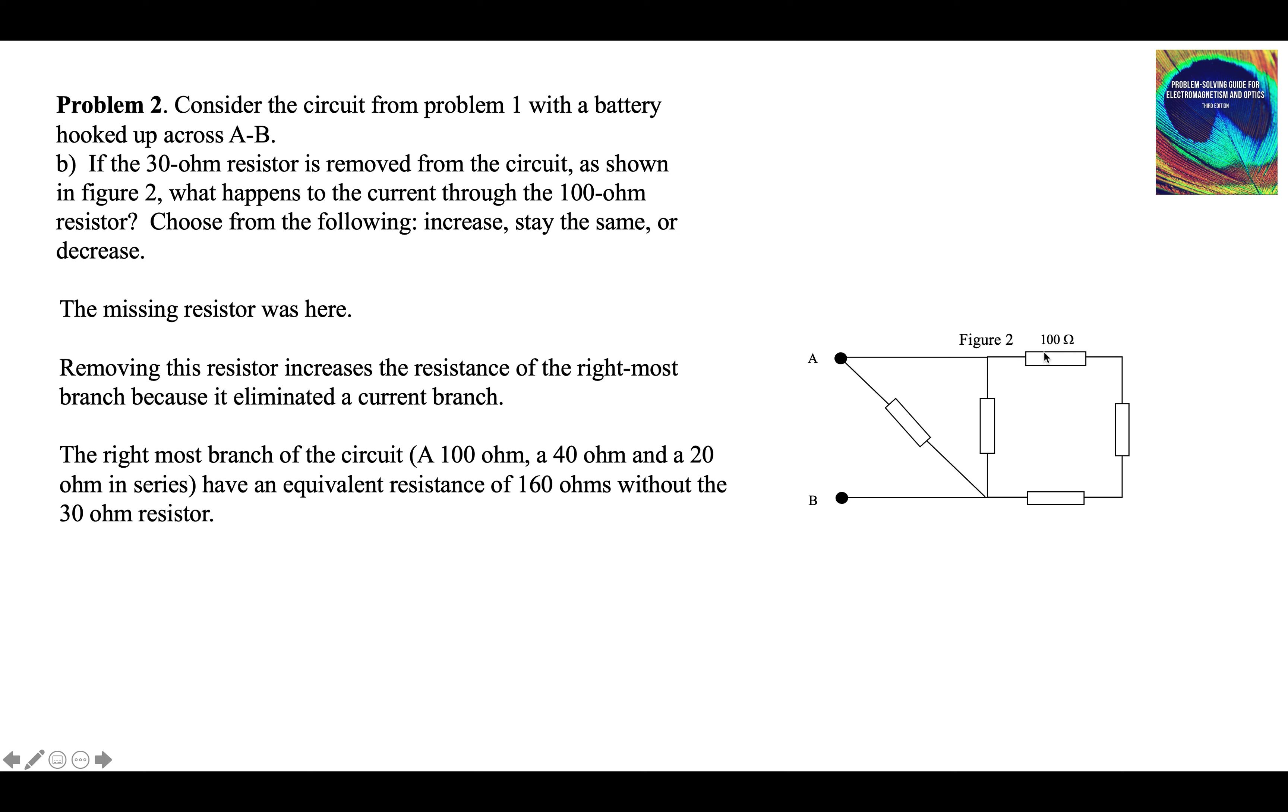The resistance of this branch is now 100, plus 40, plus 20, three in series. It's 160 ohms. With a 30 in place, if you remember, the resistance of this branch was only 120 ohms.